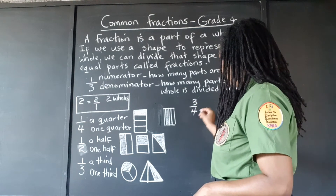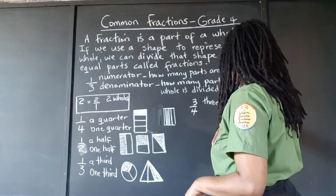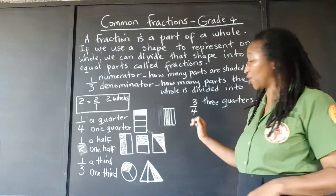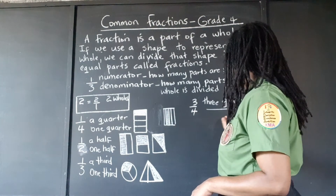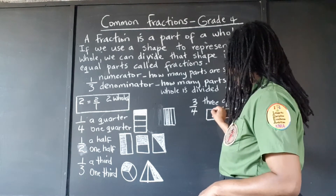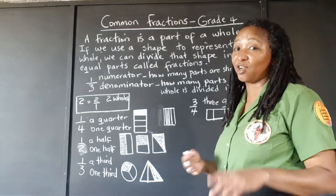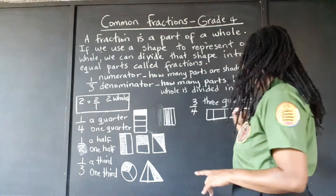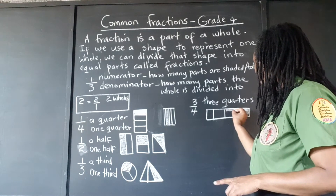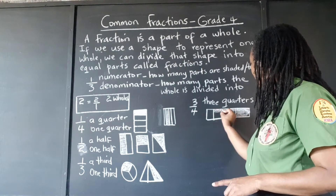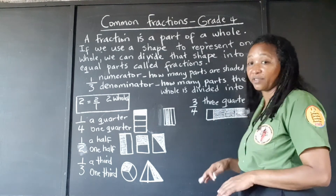Three quarters is another common fraction. That means we have one whole and we're cutting it into four equal parts. And we're going to shade three of them — one, two, three parts. So three parts are shaded out of the four.